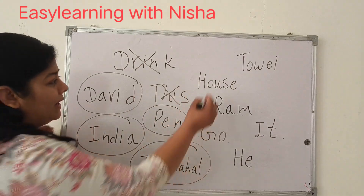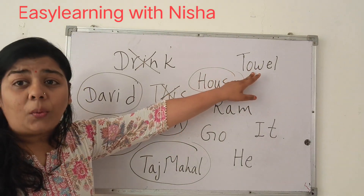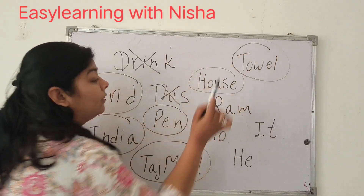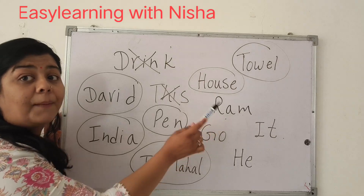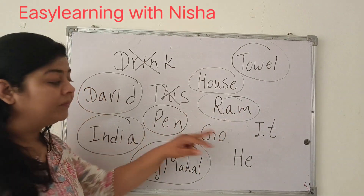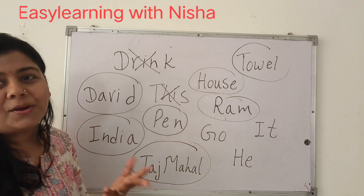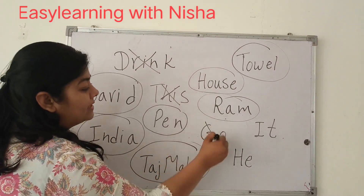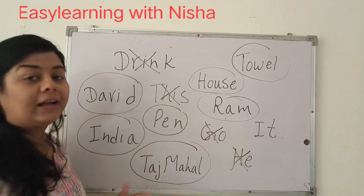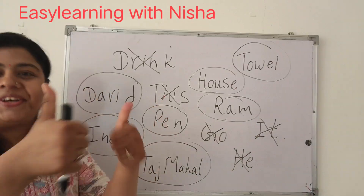House — house is a place, so it's a noun. Towel — towel is a thing, so yes, it's a noun. Ram — Ram is the name of someone, so yes, it's a noun. Go — is go a noun? No, because it's a verb — it's not the name of a person, place, or thing. 'He' — also not a noun. 'No' — that is also not a noun.